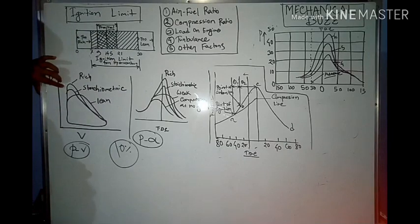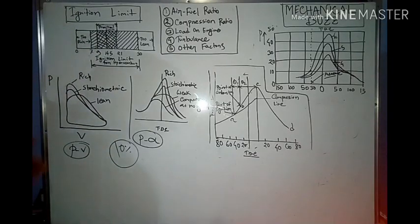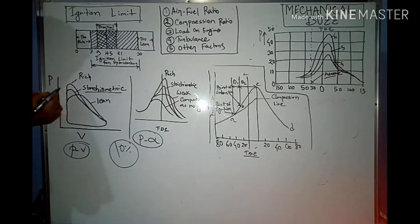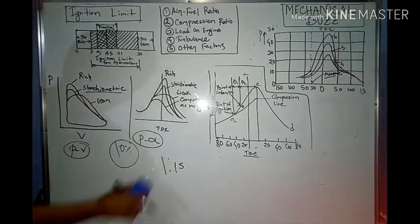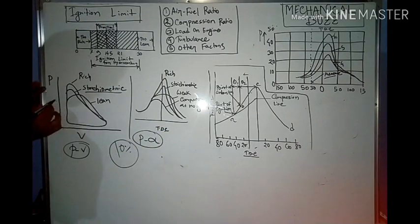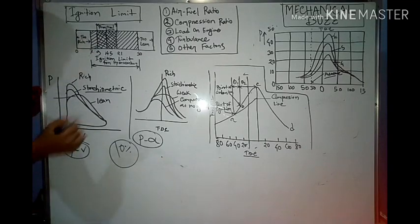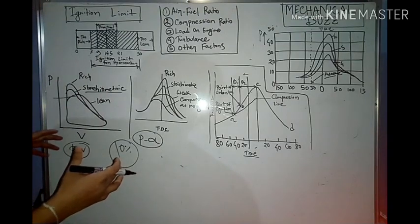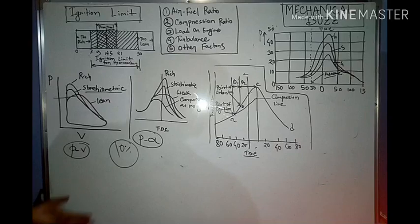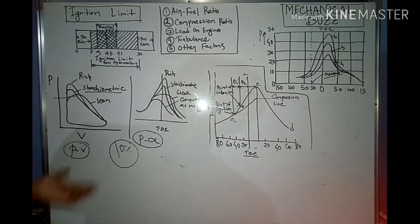If you have a 10% richer mixture in your engine, you will have better pressure because flame propagation completes within a shorter time. For the stoichiometric ratio — 1:15 or 1:14.5 — you get somewhat less pressure, and for a lean mixture you can see technically very low pressure building inside the cylinder. So a 10% richer mixture gives better combustion speed and thus better pressure and efficiency.